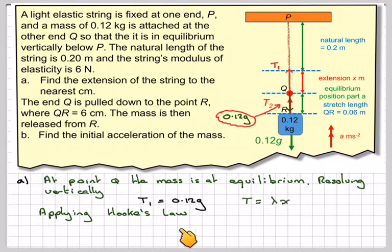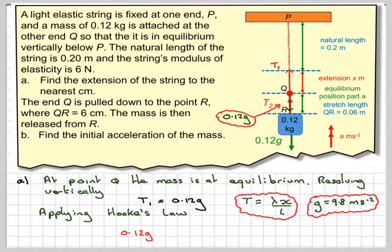Applying Hooke's Law, and Hooke's Law says T is equal to the lambda, which is the modulus of elasticity, times the extension X, divided by L, which is the natural length. G is going to be 9.8 meters per second squared, so we're going to have 0.12 G, which is the tension, because it's equal to the weight at that point, is equal to 6 times the extension, what I've got to calculate, divided by 0.2. And if I rearrange that, I'm going to get that X is equal to 0.0392 meters. It says to the nearest centimeter, so we're going to take that to be 4 centimeters.